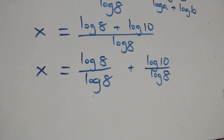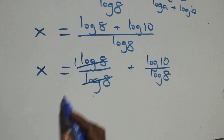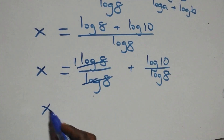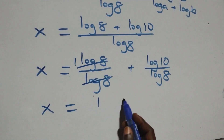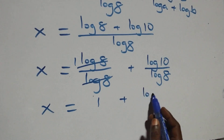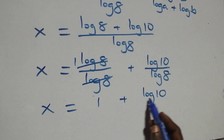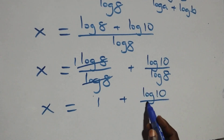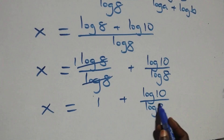Here, log 8 cancels each other, leaving x equals log 10 over log 8.